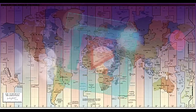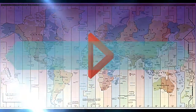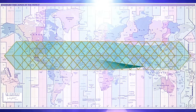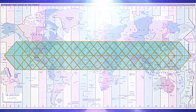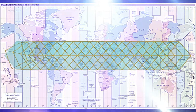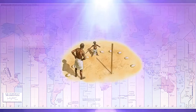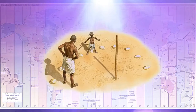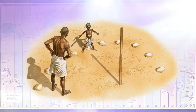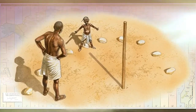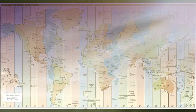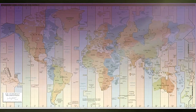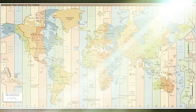Before clocks were invented, people kept time using different instruments to observe the Sun's meridian passing at noon. The earliest time-measuring devices we know are sundials and water clocks.